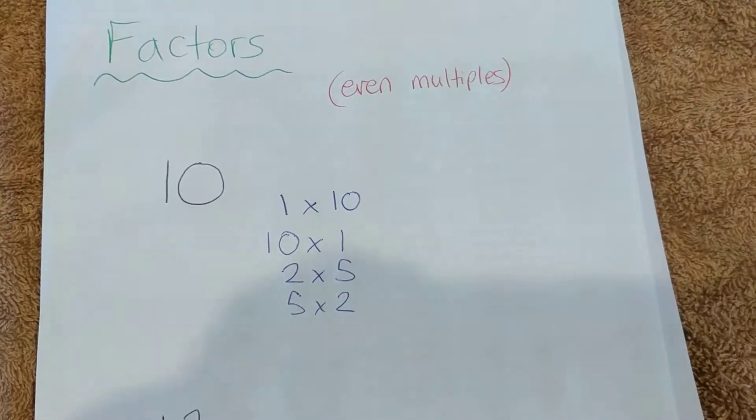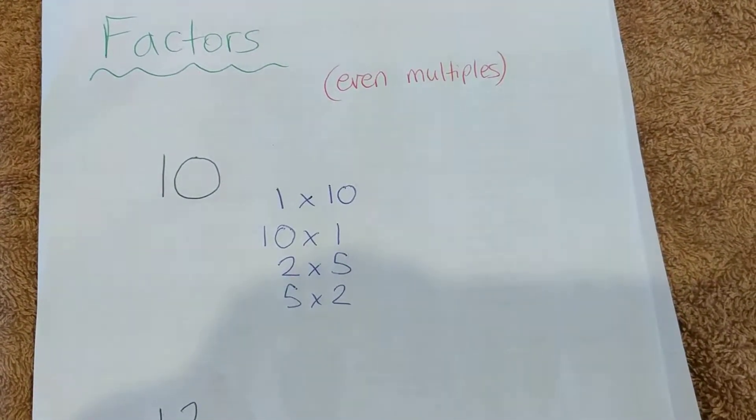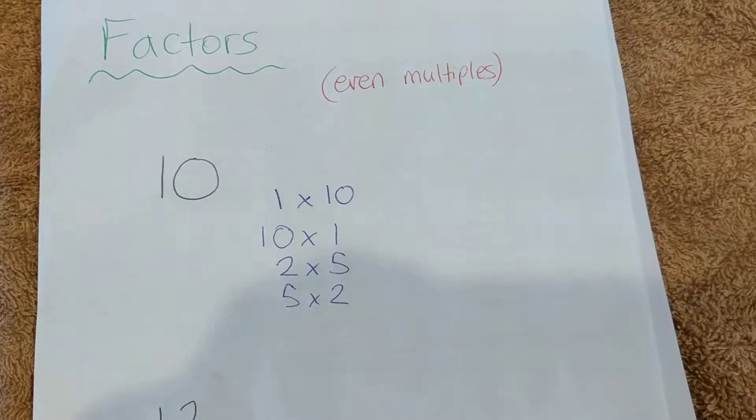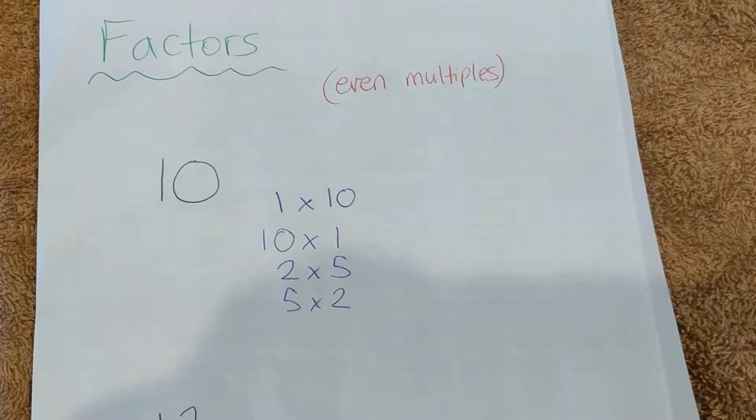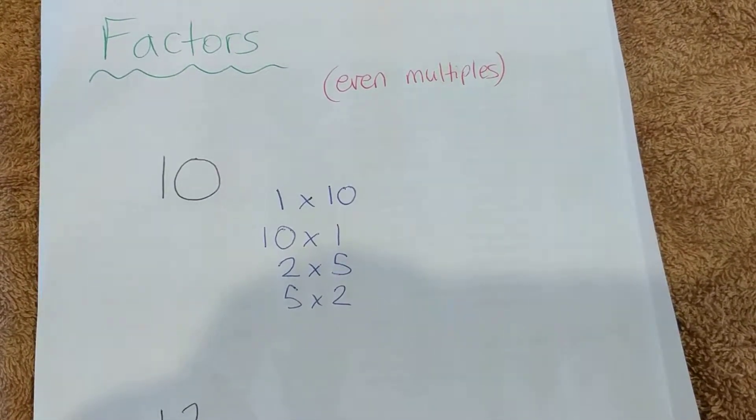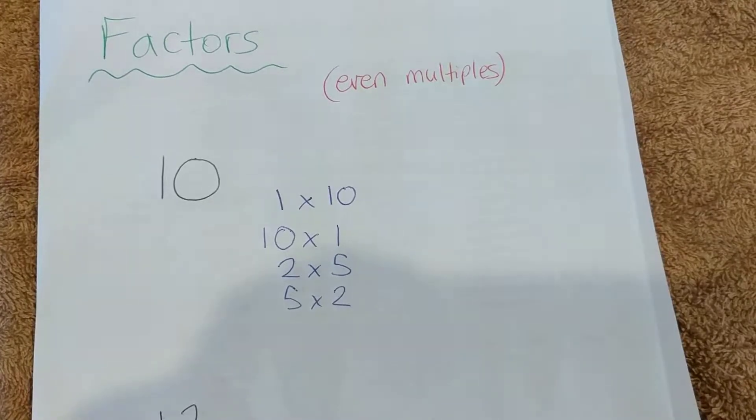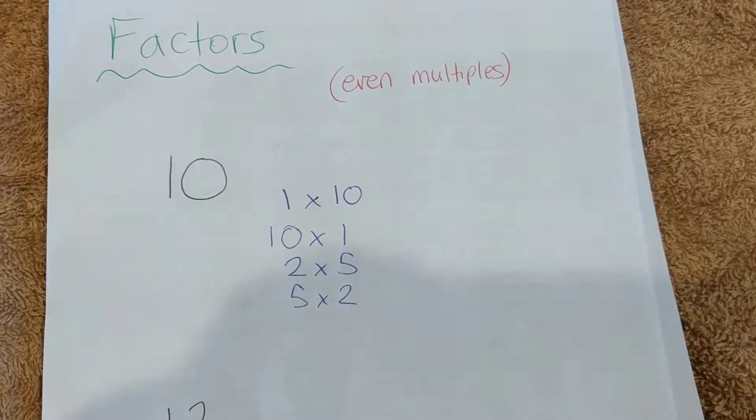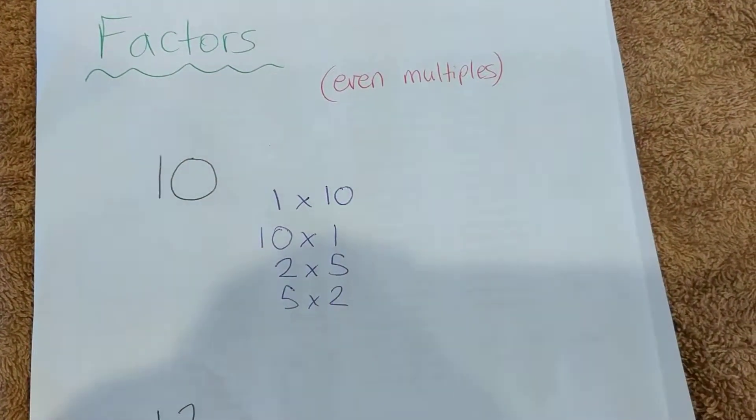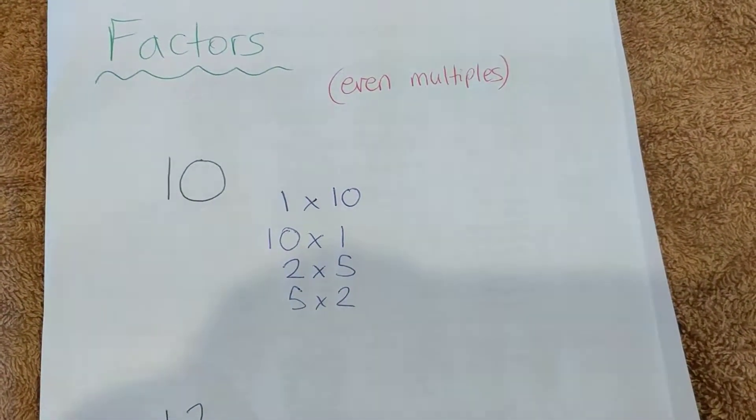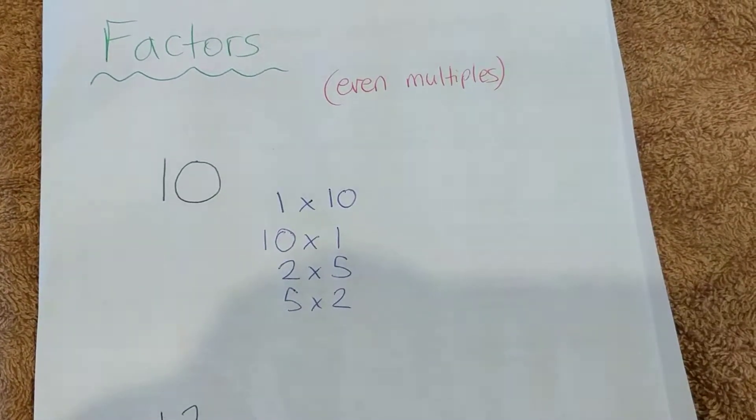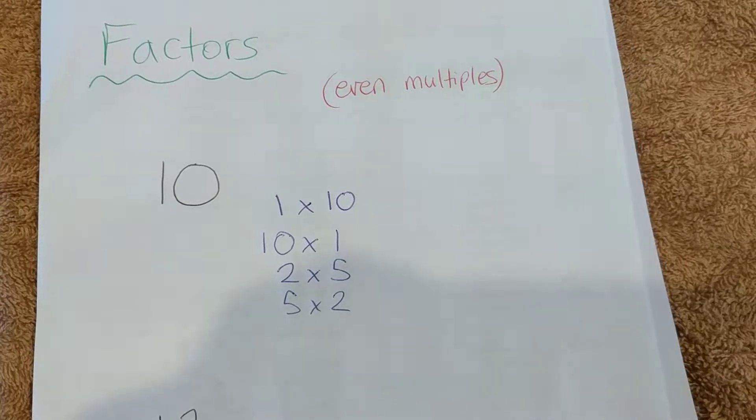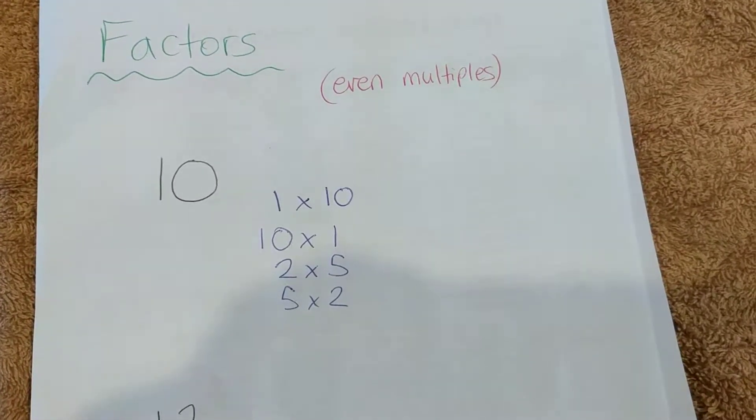So 3. Well, 3 does go into 10 three times but there is one left over and that's not an even multiple. So 3 is not a factor of 10, nor is 4, nor is 6, nor is 7. Once you get over halfway, you can pretty much tell that it's not going to be a factor because 7 is always going to have a remainder, as is 8, as is 9. And any number over 10, of course, is not a factor either, such as 11 or 12. It doesn't go into 10 evenly, so we don't need to worry about those over 10.